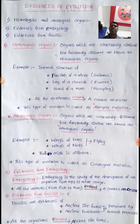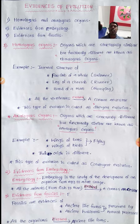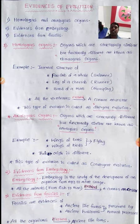Organs which are structurally similar but functionally different are known as homologous organs. For example, the internal structure of the forelimb of a whale, the leg of a cheetah, and the hand of a man — these are examples of homologous organs.